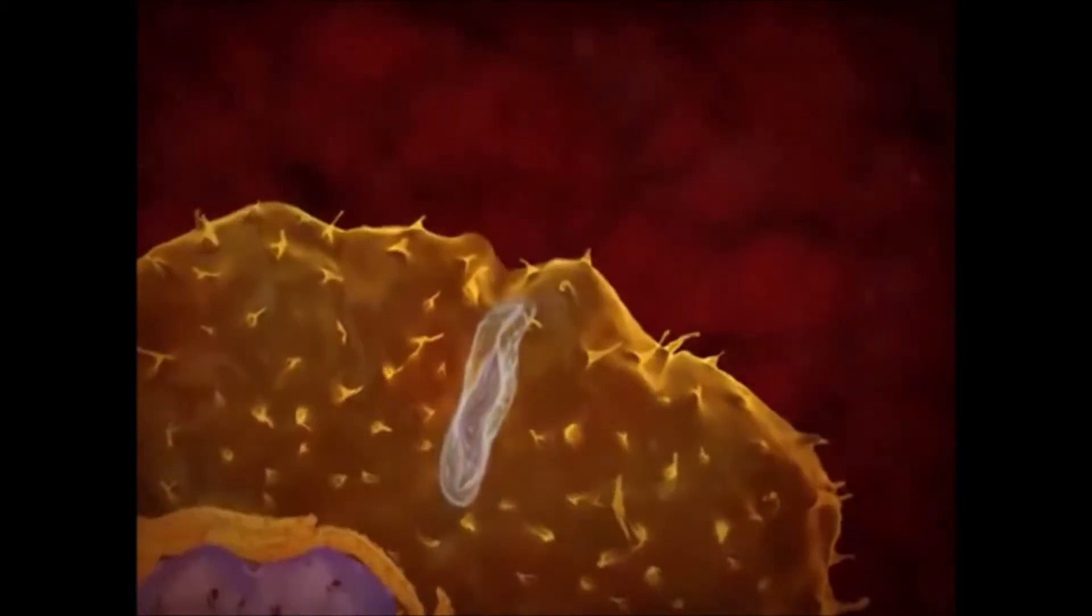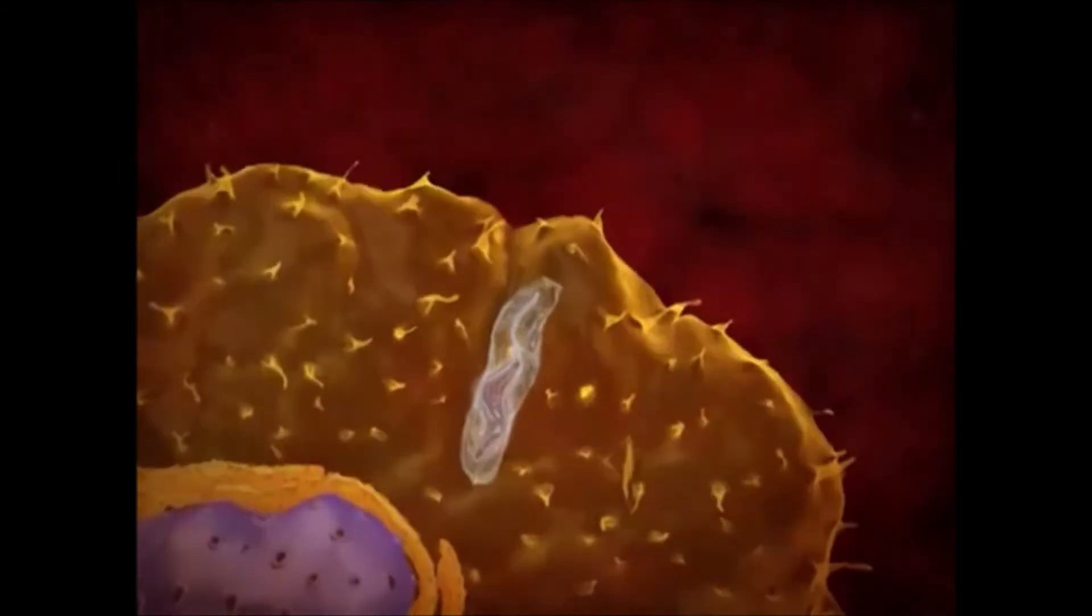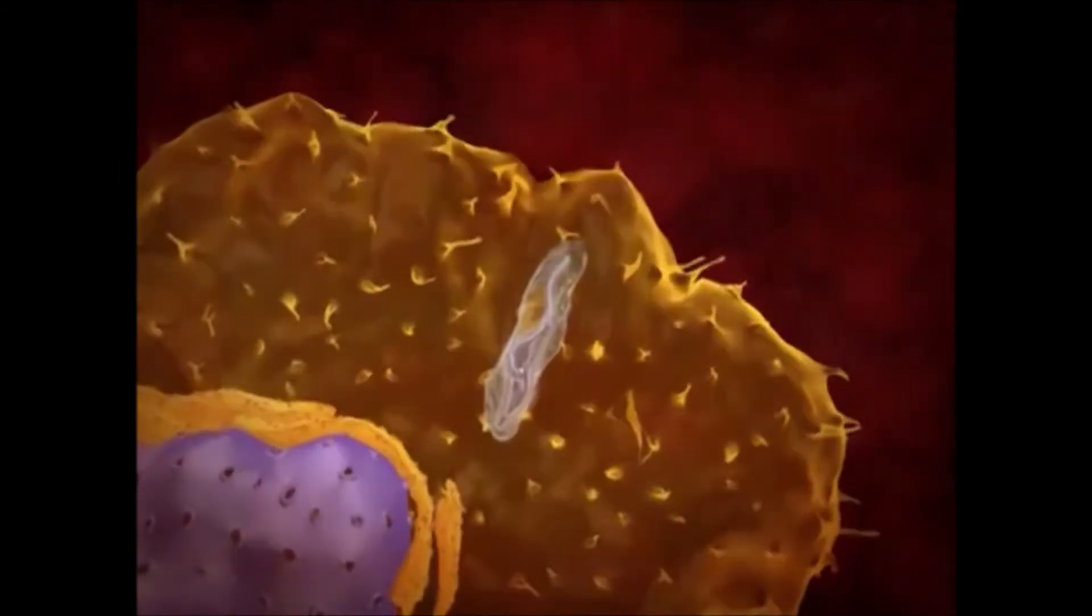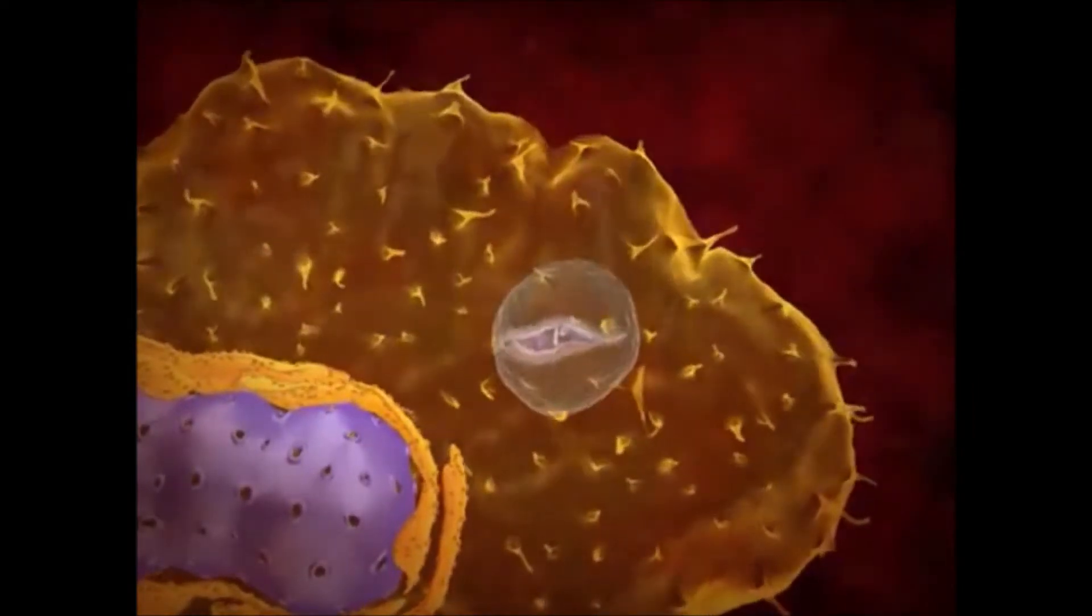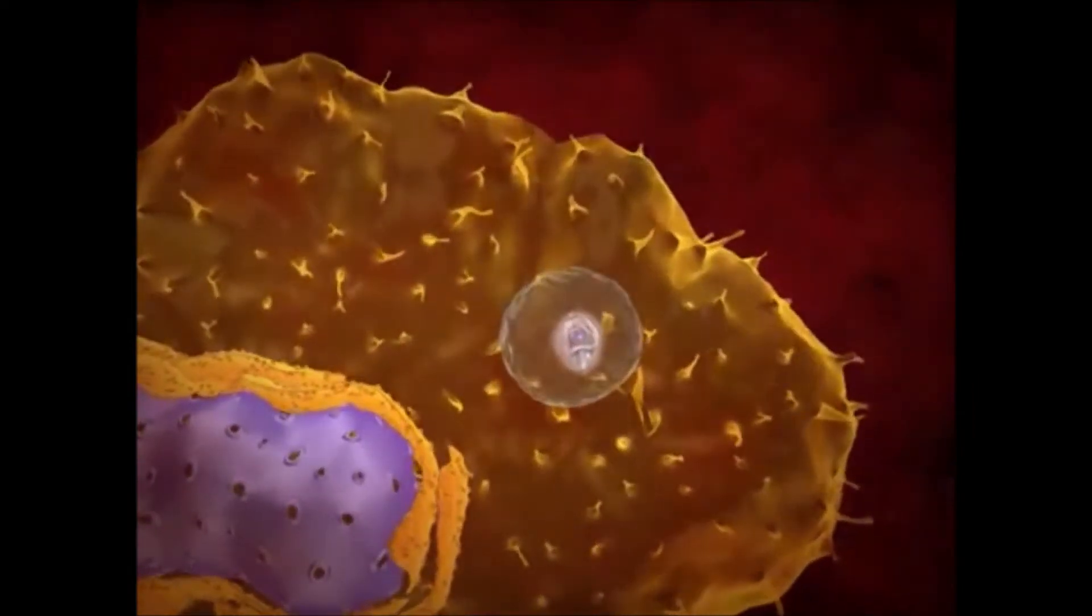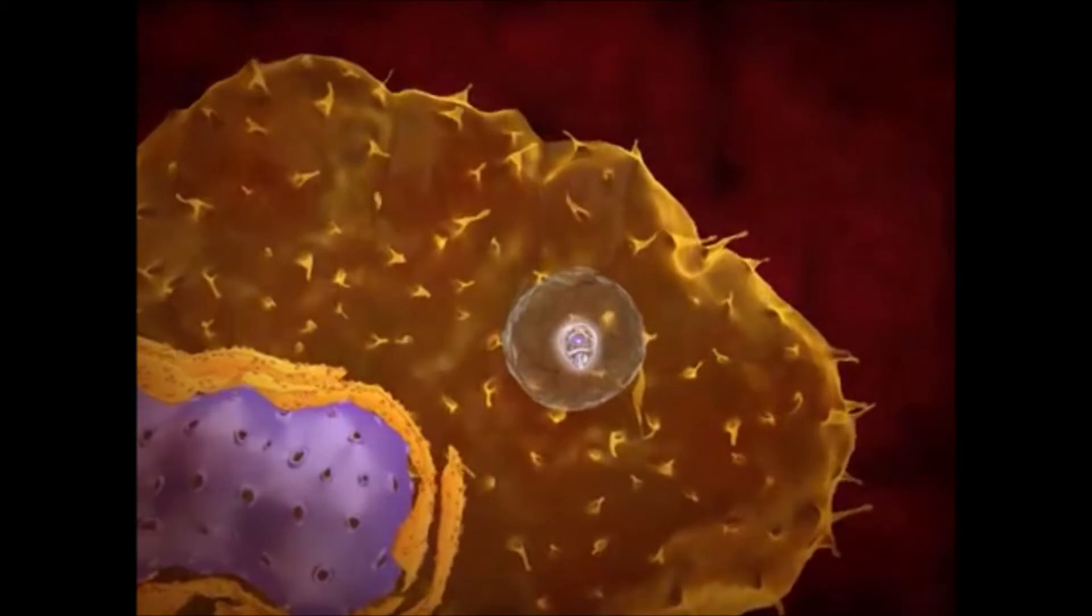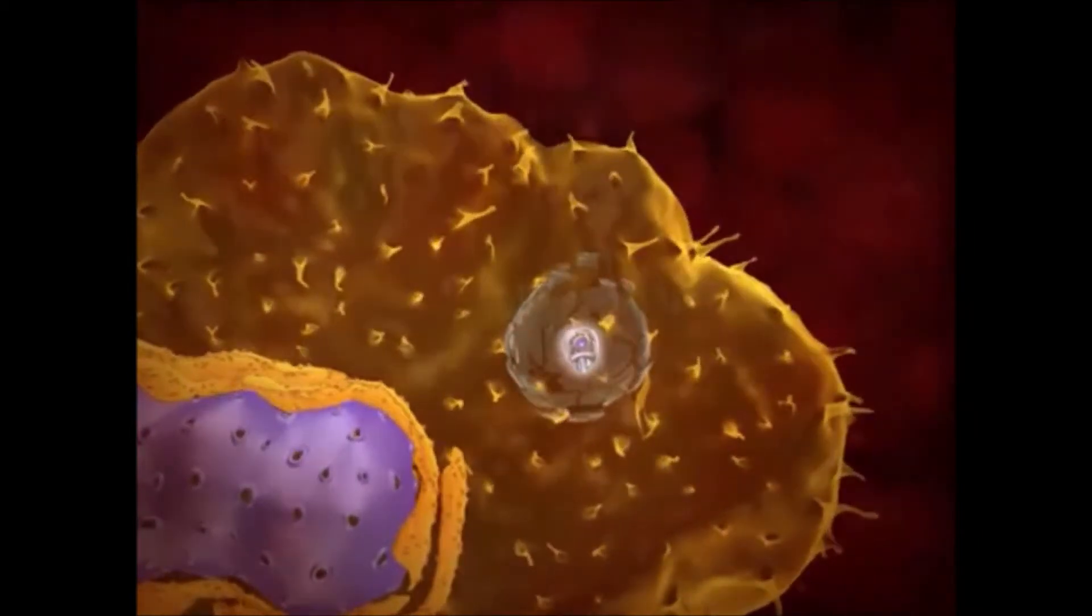The lysosomal content is released in the vacuole. However, the parasite is not affected. In the vacuole, the tripomastigote transforms into an amastigote. This transformation is accompanied by the disruption of the parasitophorous vacuole membrane.